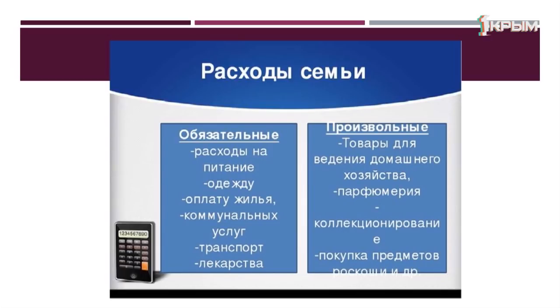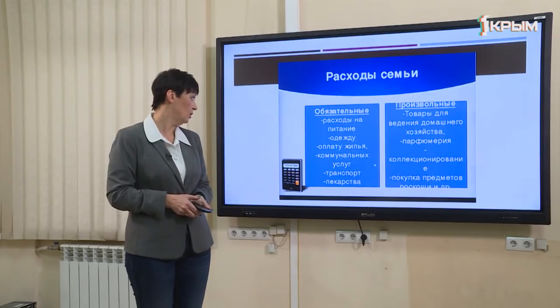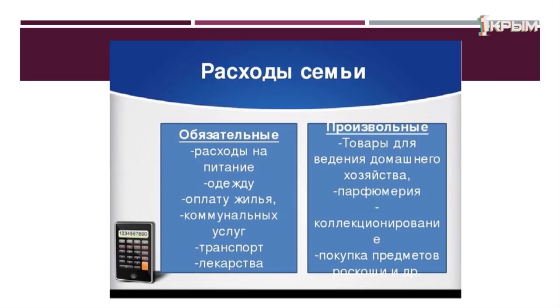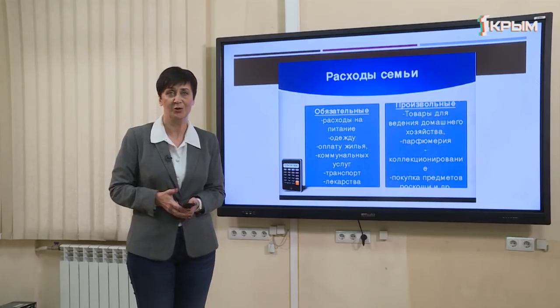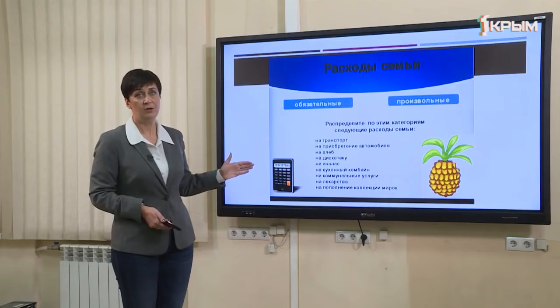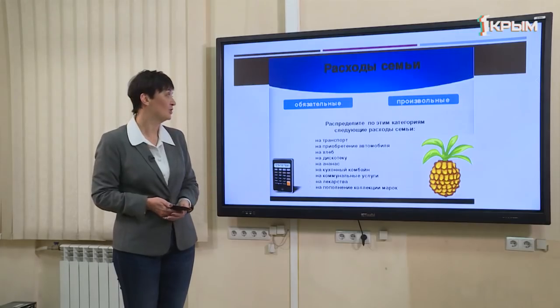Обязательные (постоянные) расходы — это те, без которых мы не можем существовать: покупка продуктов питания, одежды, ежемесячная оплата жилищно-коммунальных услуг, транспорт, бензин, лекарства. Произвольные расходы — это товары, без которых в принципе можно обойтись: бытовые приборы, предметы роскоши, драгоценности, особенные продукты к празднику. Посмотрите на слайд и распределите перечисленные расходы на обязательные и произвольные.